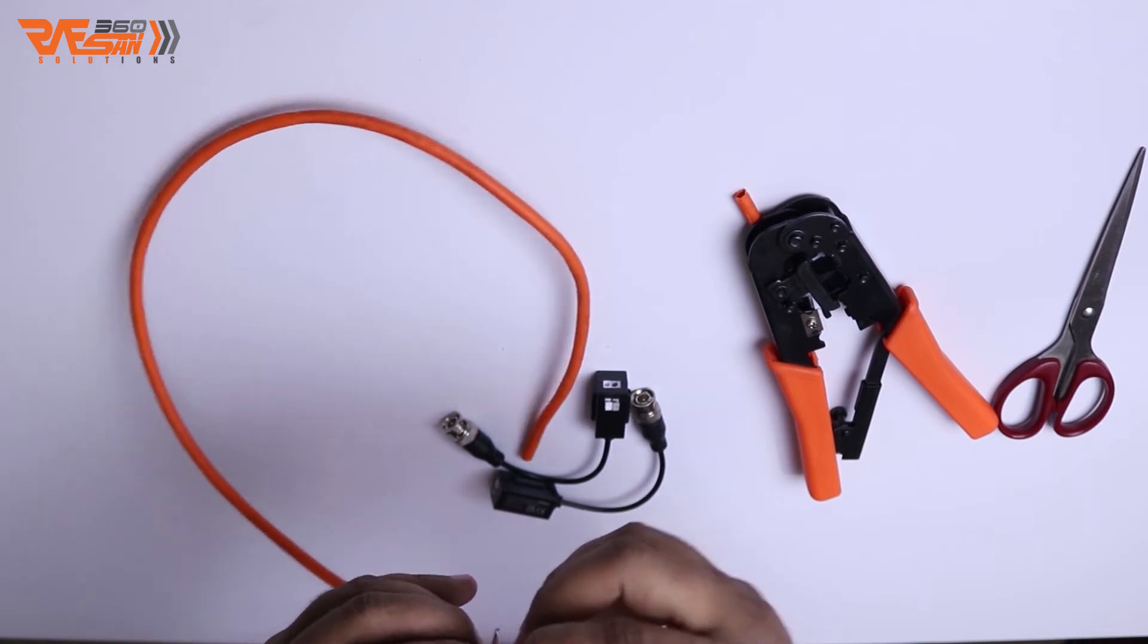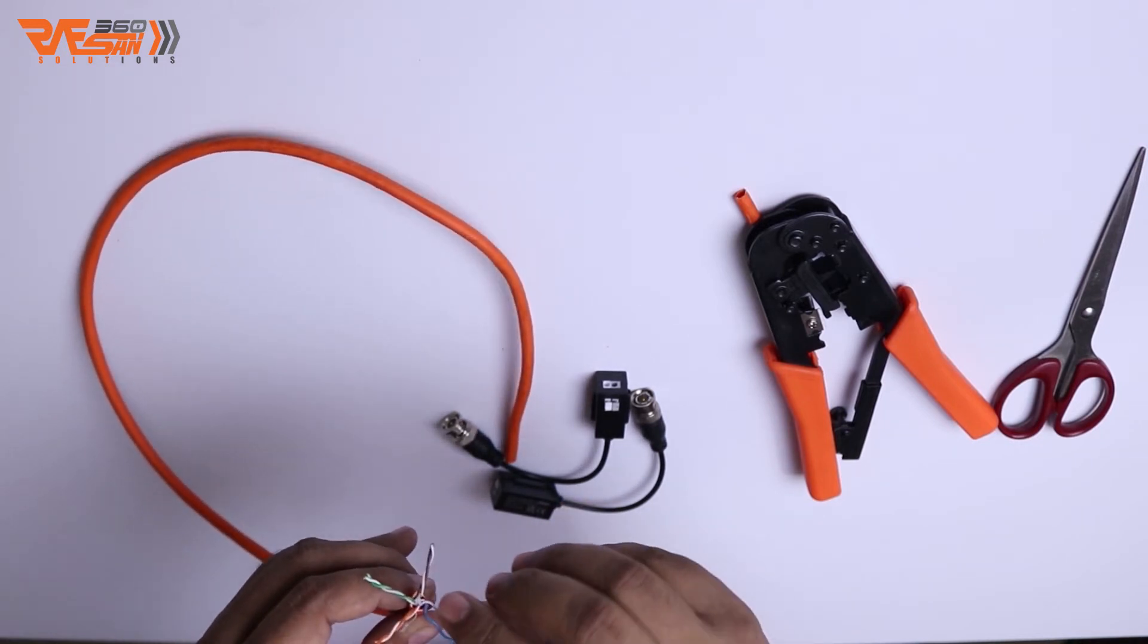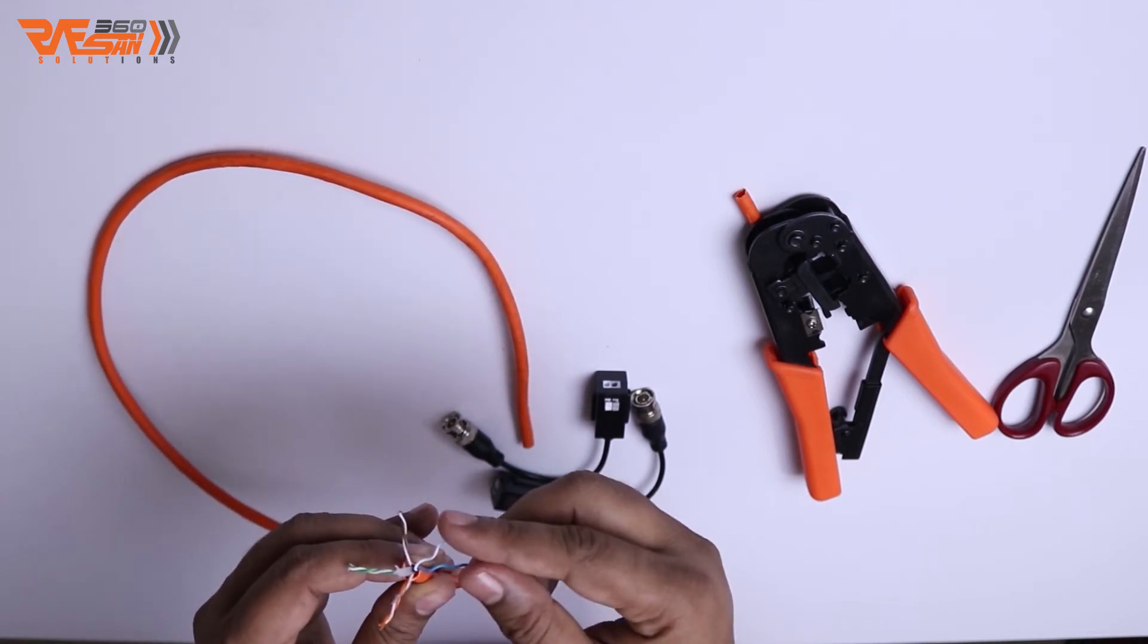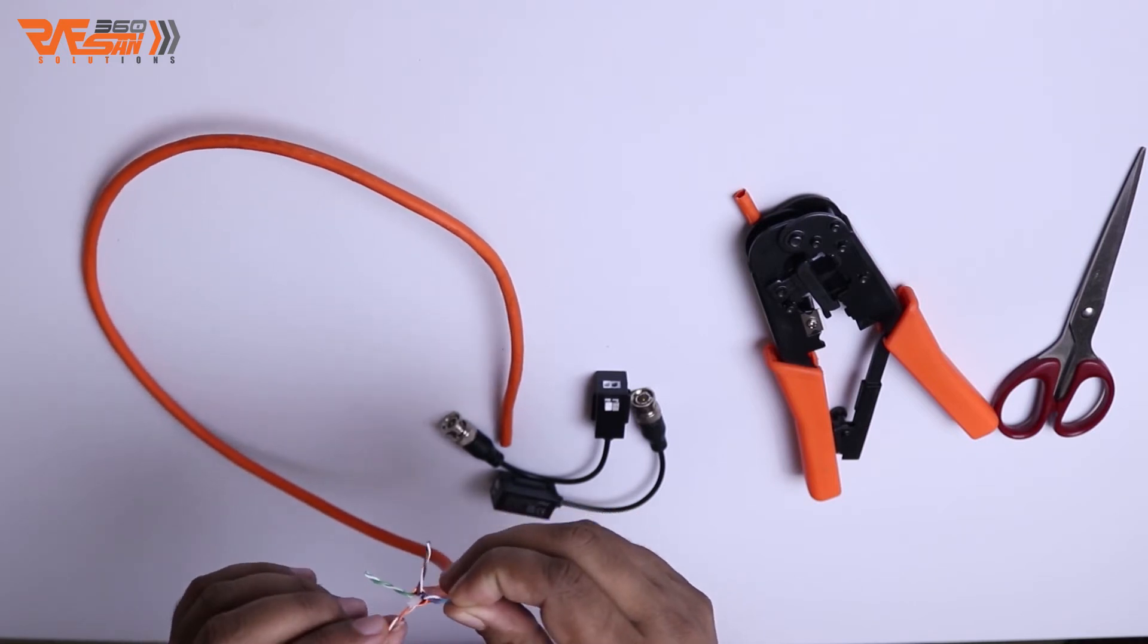In the CAT6 cable, we use blue and white blue wires. One pair uses the two wires for the connection, and the other pair can also be used.